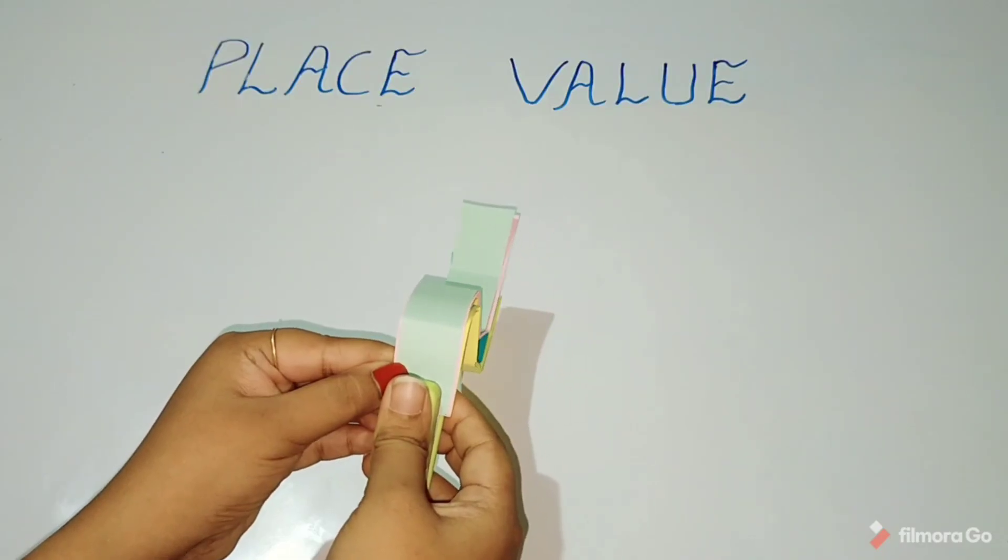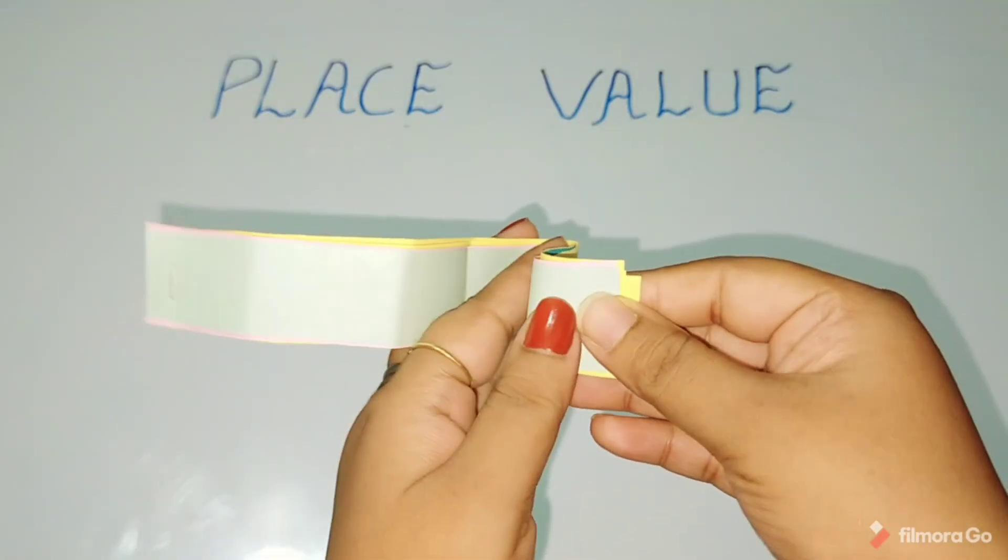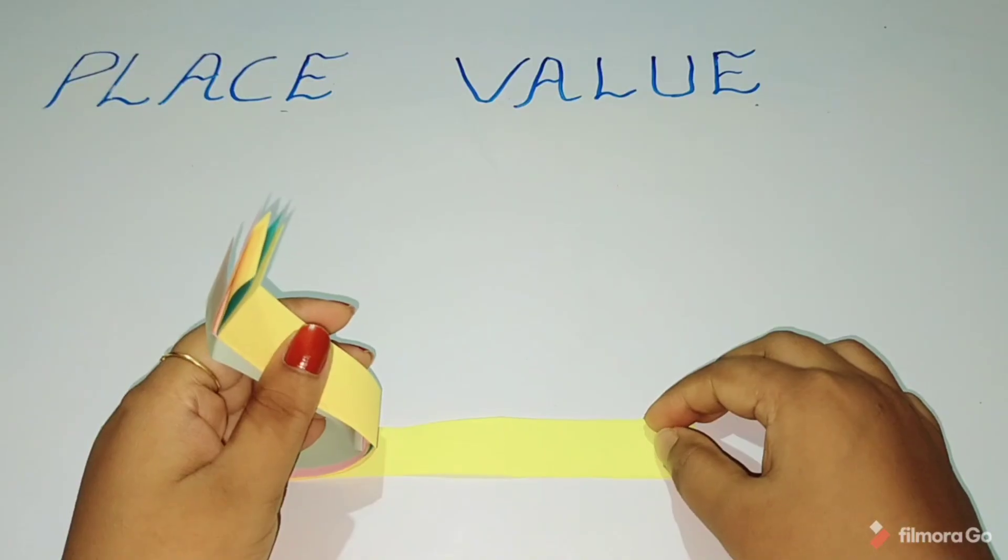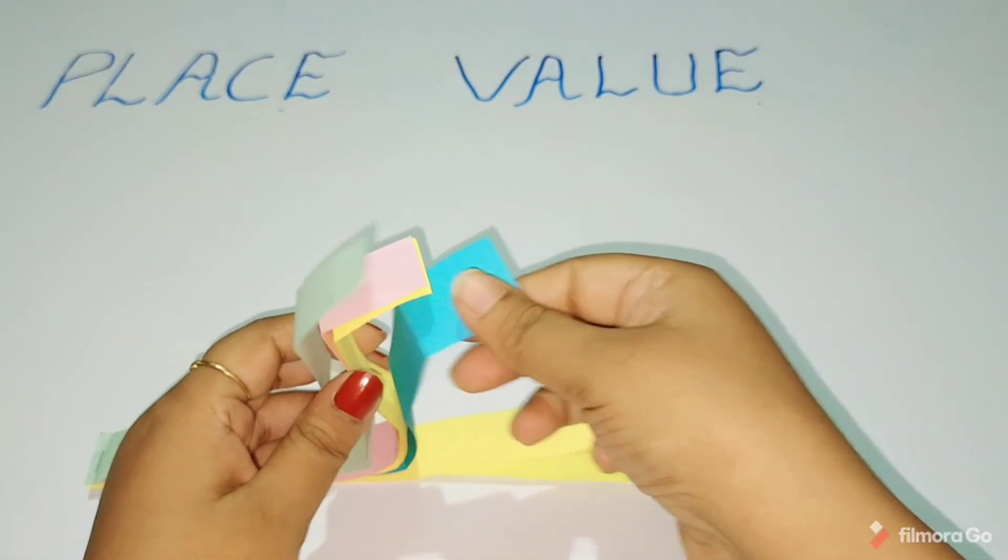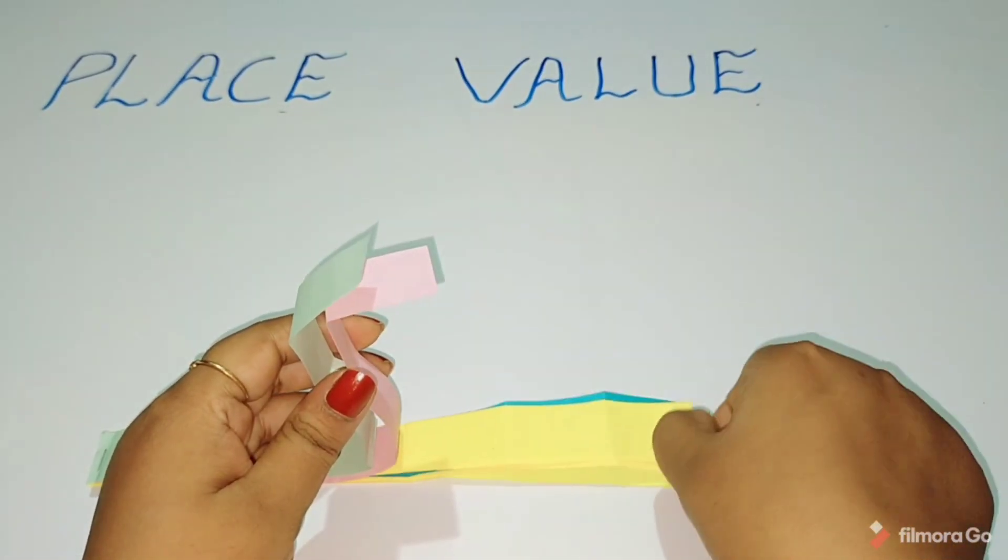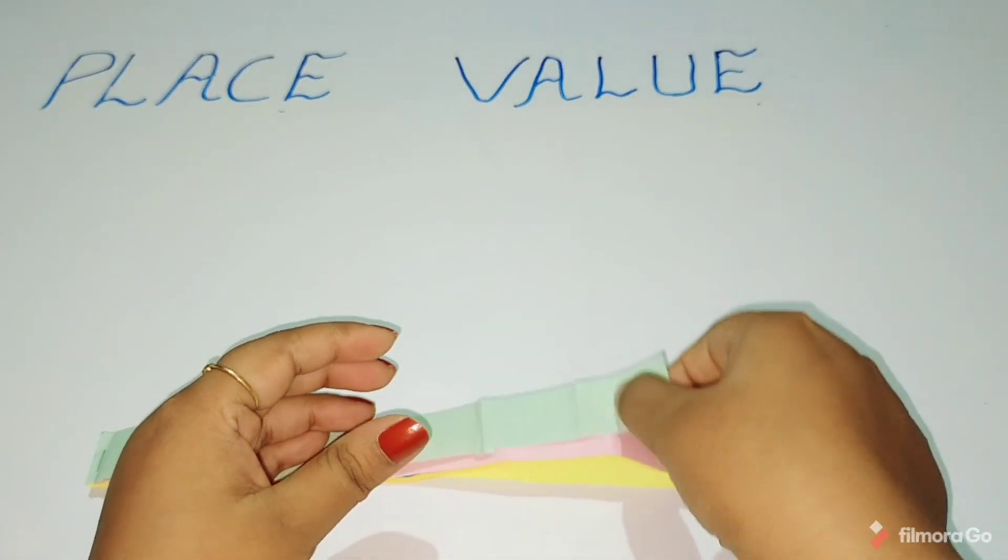Now staple them together. From the back side, this is your first paper strip, this is your second one, third one, fourth, fifth, and sixth.